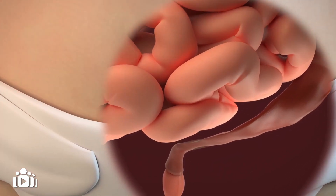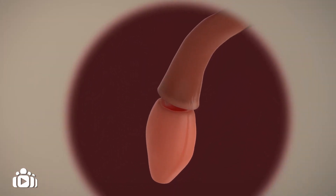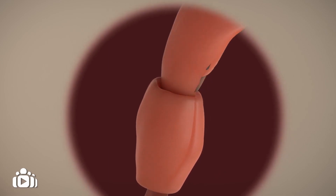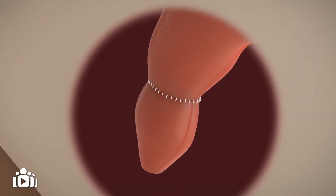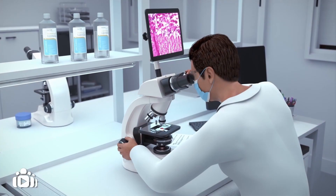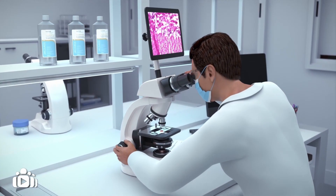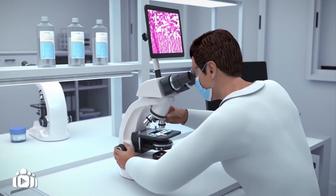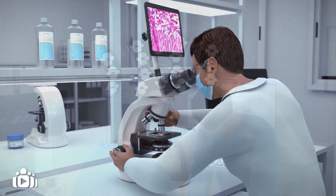The remaining part of the bowel is then connected to the anal canal. This is called a pull-through, and it helps to restore the movement of faeces or poop. During the operation, tissue samples can be taken to confirm the presence of ganglion cells.